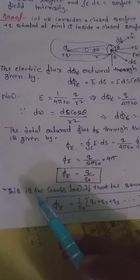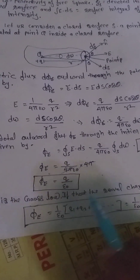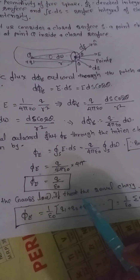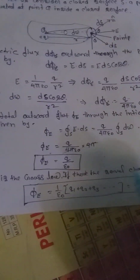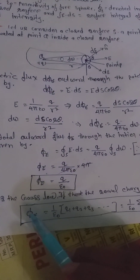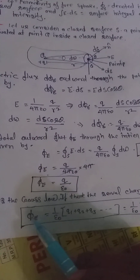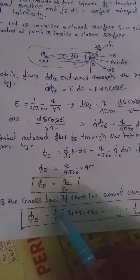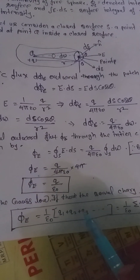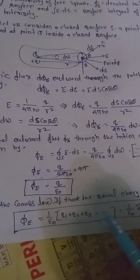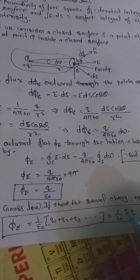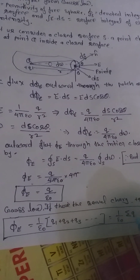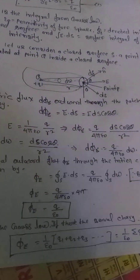This is Gauss's Law. For several charges q₁, q₂, ... qₙ enclosed by the surface, Φ_E = (1/εₒ)·(q₁ + q₂ + ... + qₙ) = (1/εₒ)·Σq. Hence Gauss's Law is proved.